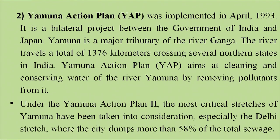The Yamuna Action Plan was also implemented in 1993. It is a bilateral project between the Government of India and Japan for cleaning river Yamuna, which runs for about 1,336 kilometers across several northern Indian states. The Action Plan aims at cleaning and conserving the water of river Yamuna by removing pollutants. The most critical stretches of Yamuna have been taken up for cleaning, primarily focusing on the pollution around Delhi stretches where the city dumps most of its total sewage.